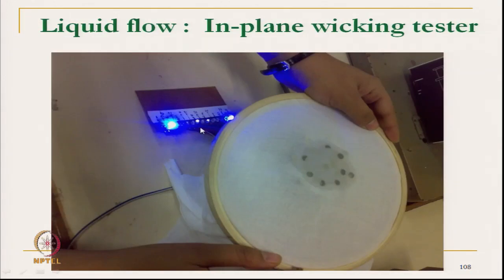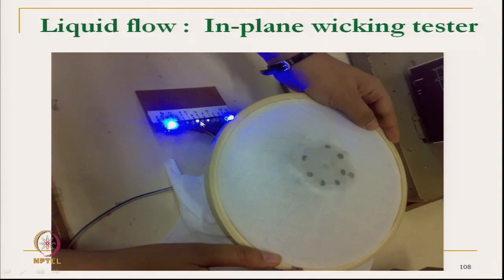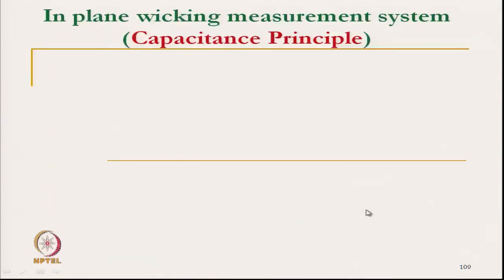In the in-plane wicking tester, at the bottom there are electrodes. As soon as water is touching an electrode at the centre, the LED glows and the data can be stored in the computer.